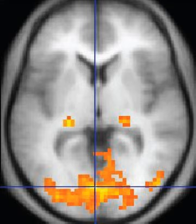Balanced steady state free precession imaging has better image contrast between the blood pool and myocardium than flash MRI, yet it will produce severe banding artifact when the B0 inhomogeneity is strong. Real-time MRI is likely to add important information on diseases of the heart and the joints, and in many cases may make MRI examinations easier and more comfortable for patients, especially for patients who cannot hold their breath or who have arrhythmia.